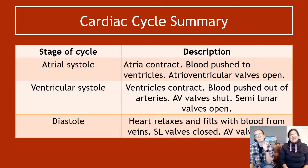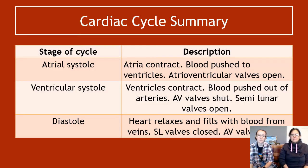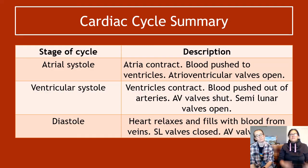To summarize: atrial systole — the atria contract, blood is pushed to the ventricles, the AV valves are open. Ventricular systole — both ventricles contract, blood is pushed out through the arteries, the AV valves are shut and the SL valves are open. Diastole — the heart relaxes, fills with blood from the veins, the semilunar valves are closed, and the atrioventricular valves are open. And that is the end of the cardiac cycle — relatively painless.